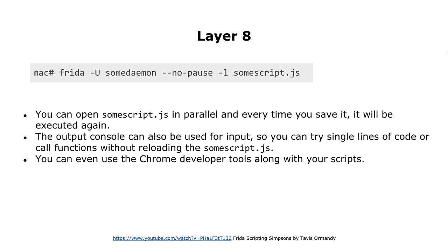There are a few things that enable super fast development with Frida. First, you can edit a script in an editor while it is already running and every time you save it, Frida will reload it and execute it. If you design your script properly, this can be super useful. Next, the console you get output in can also be used for live scripting in parallel and it has auto-completion. So you can define functions in your script, such as one to reset a chip, and then call it from the console whenever you need it. I also linked a video below that uses the Chrome DevTools for Frida development.